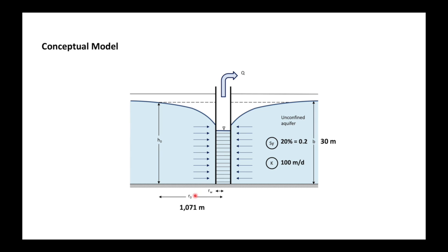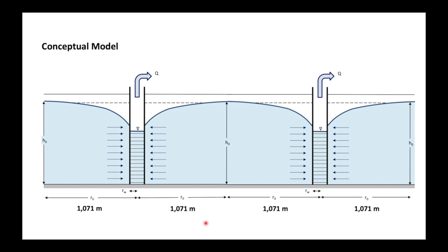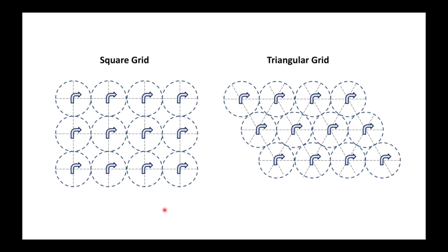Here's our updated conceptual model with R₀. If we want more than one well in the well field we must ensure the radii of influence do not overlap. We can place wells in a square grid about two kilometers apart, or use a more efficient triangular grid configuration to avoid wasting space between the wells.